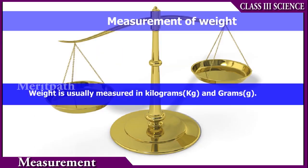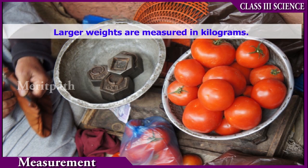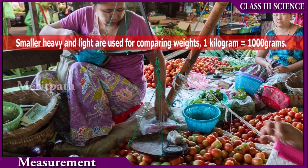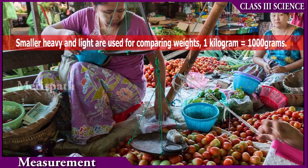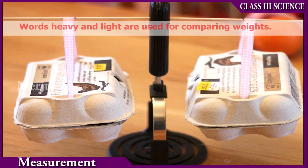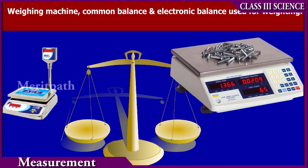Measurement of weight: weight is usually measured in kilograms and grams. Larger weights are measured in kilograms, whereas smaller weights are measured in grams. Heavy and light are used for comparing weights. One kilogram is equal to one thousand grams. Weighing machines, common balance, and electronic balance are used for weighing.